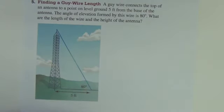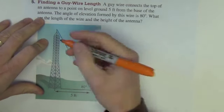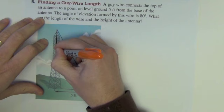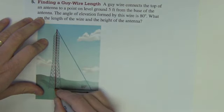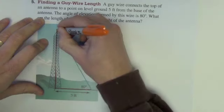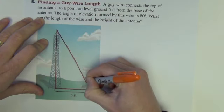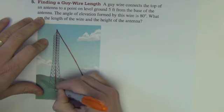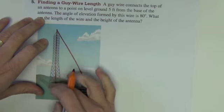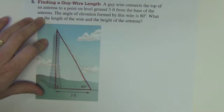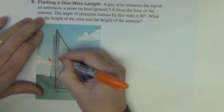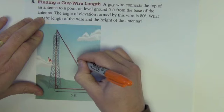Okay, first one, it says a guy wire connects the top of an antenna to a point on level ground five feet from the base of an antenna. The angle of elevation formed by this wire is 80 degrees. What are the length of the wire and the height of the antenna? Well, notice the tower, the wire, and the ground make a right triangle. Convenient, huh? It says that we're on level ground here, so we know that we've got a nice right angle inside there.